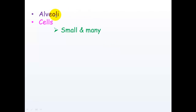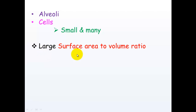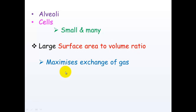Now, when you look at both alveoli and cells, you'll notice that they're very small and there are many of them, and there's a reason for this. This is to get a large surface area to volume ratio. Having a large surface area to volume ratio will maximize the exchange of gas that can occur — the bigger this ratio, the more gas exchange that can occur.